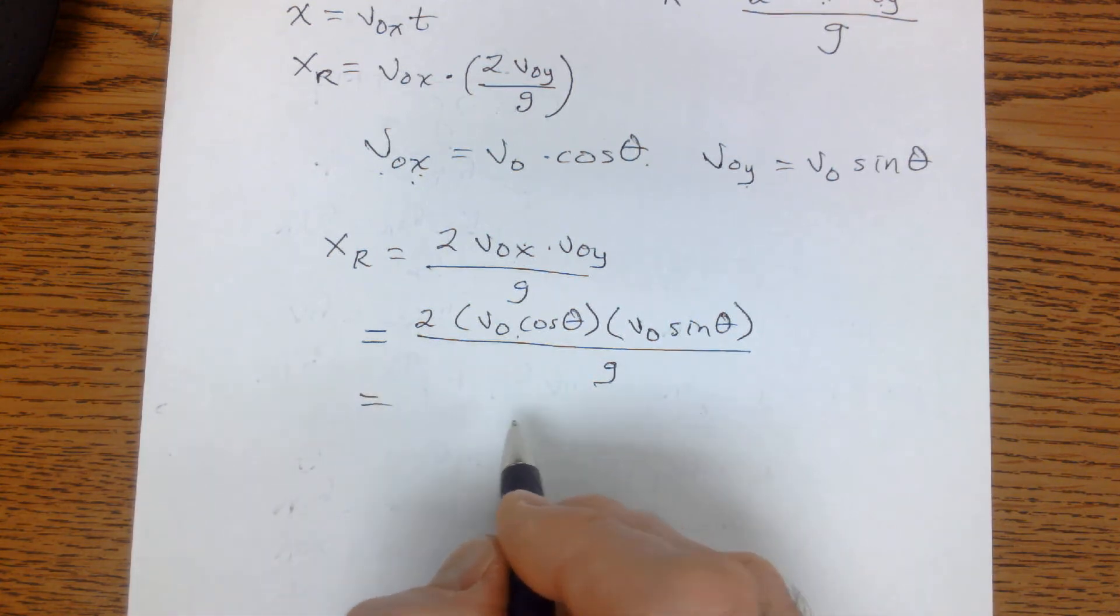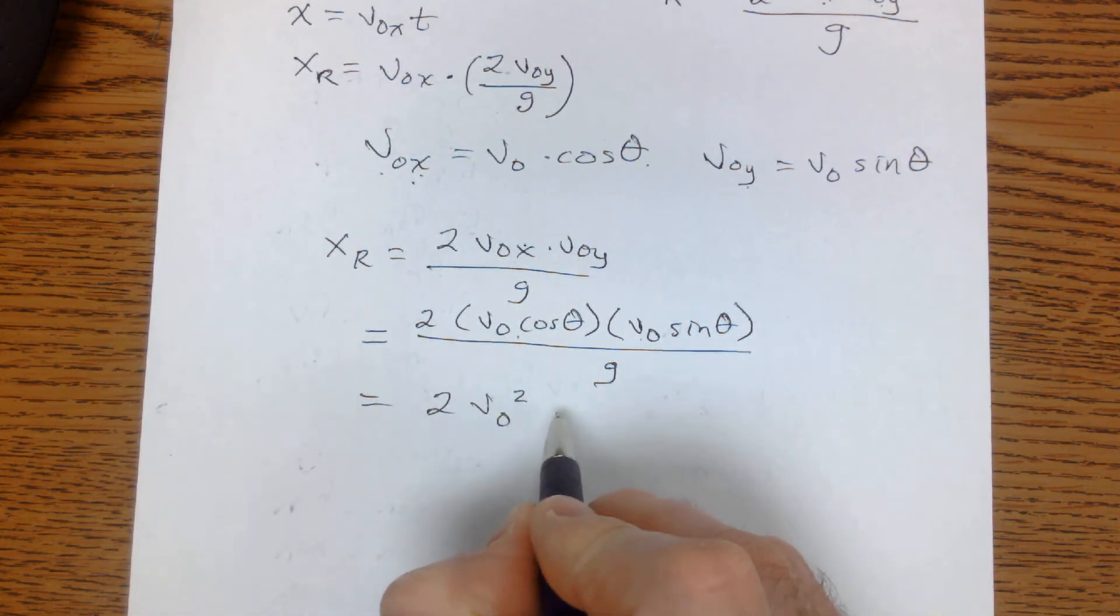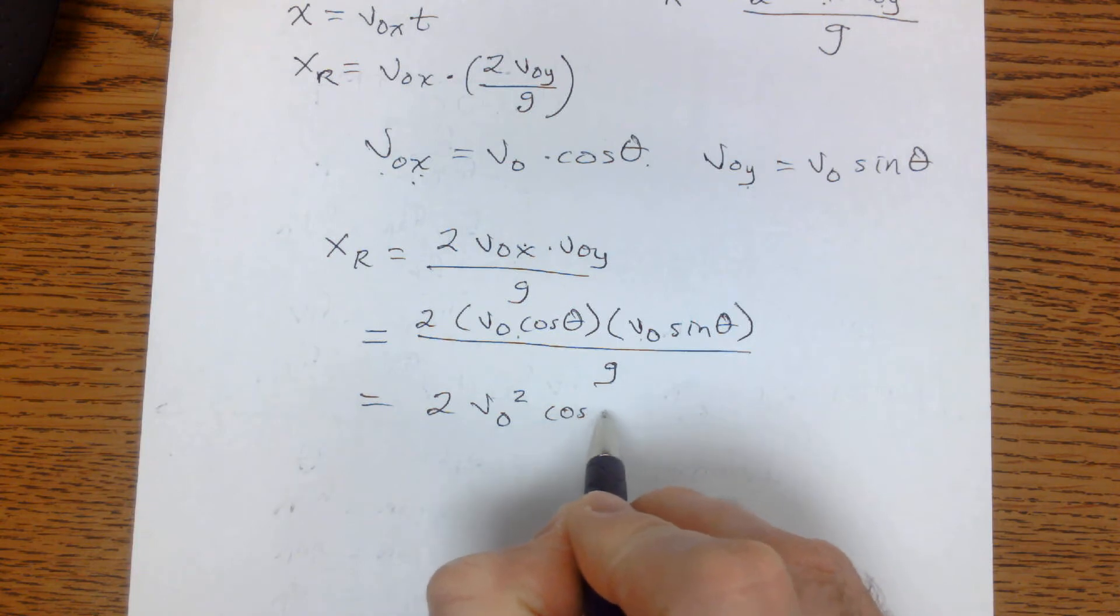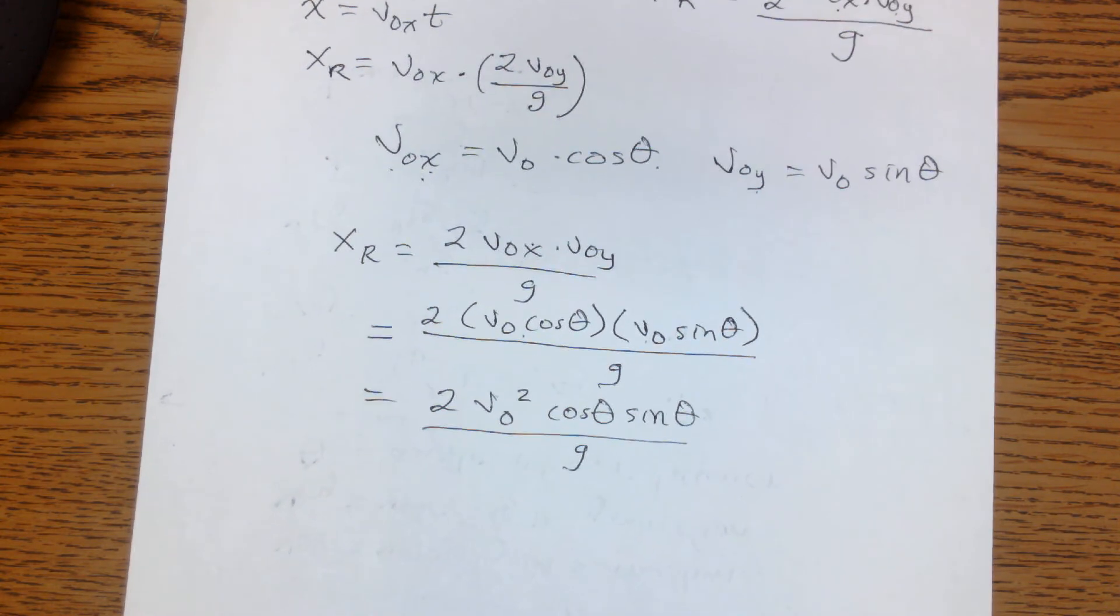And we can do just a little bit of algebra again to get this. And we'll just keep going. So we can pull the v0s out of there and we can say it's 2 times the initial velocity squared times cosine theta times sine theta all over g.